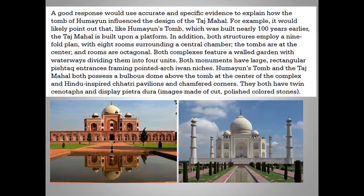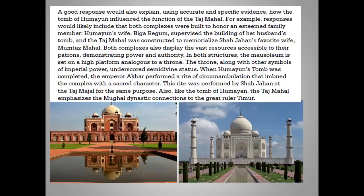If they ask for one example, give two or three. Remember, you are not penalized for wrong answers. Often the evidence is right there in the image. What could you say about the function of this work? You will not be expected to know details about a work that wasn't required, so don't panic that you know nothing about Humayun's wife. But you do know the work on the left was a tomb — the question says so. Talk about how both buildings functioned as tombs, then add information about Shah Jahan's favorite wife. You might also recall that Mughal rulers used Islam to help bolster their right to rule — hence the resemblance to a throne. Rulers almost always use religion to help bolster their right to rule, so that's usually a safe bet.